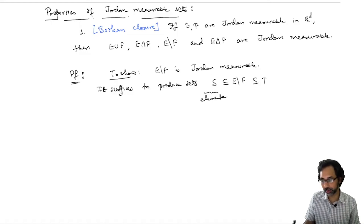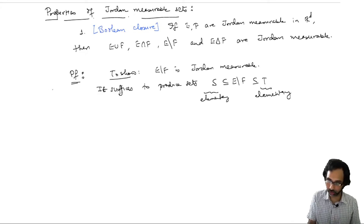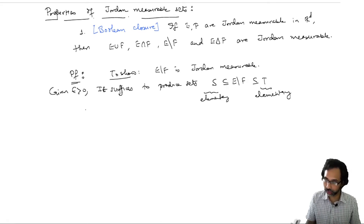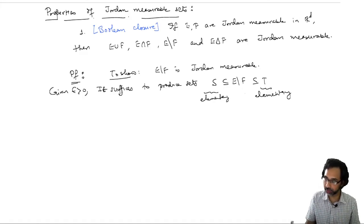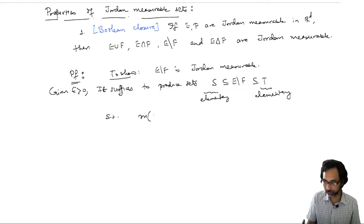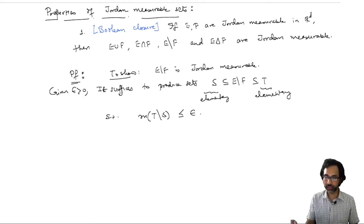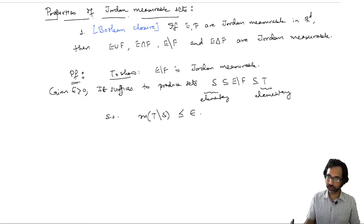To show this, it suffices to produce elementary sets S and T such that, given epsilon greater than 0, one can sandwich E minus F between S and T with the measure of T minus S less than or equal to epsilon. This is the second equivalent condition for Jordan measurability from our previous theorem.